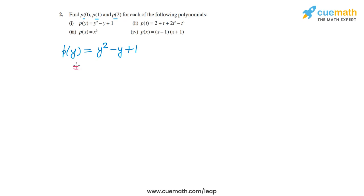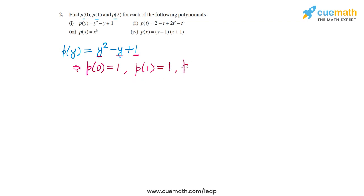For p(0), we substitute 0 in place of y: 0 squared minus 0 plus 1, so p(0) equals 1. Then p(1) is 1 squared minus 1 plus 1 — the minus 1 and plus 1 cancel — so p(1) is also 1. And p(2) is 2 squared, that's 4, minus 2 is 2, plus 1, so p(2) equals 3.